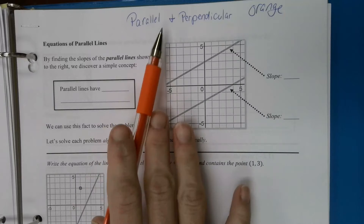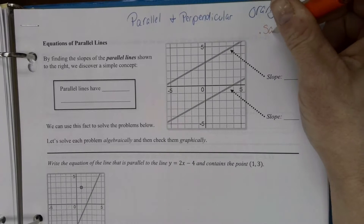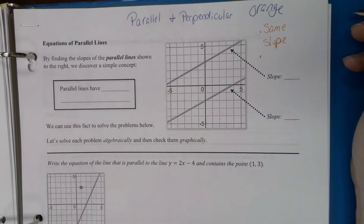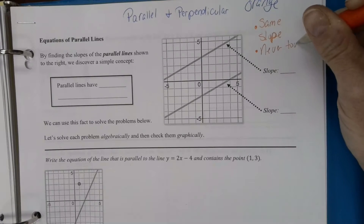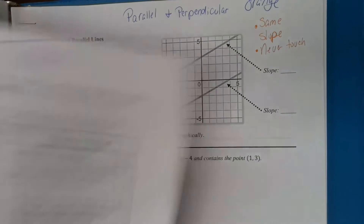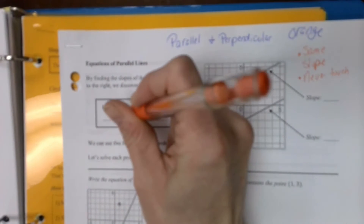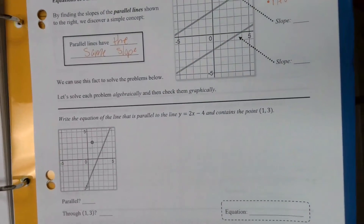Okay, so today we're going to talk about parallel lines. What are some things we know about parallel lines? They have the same slope. What else? They never intersect. Parallel lines have the same slope — that does not make them zero.